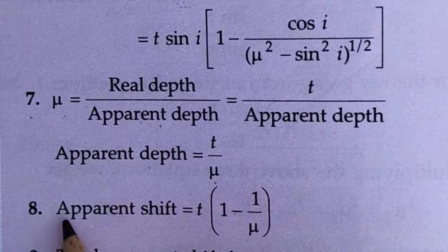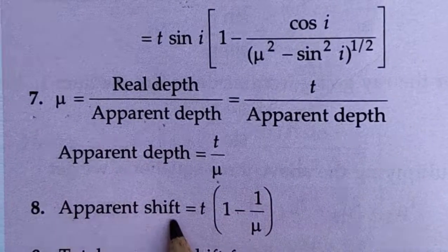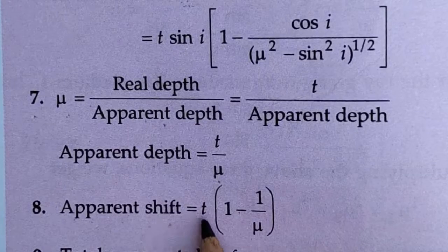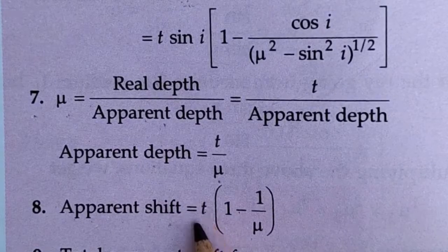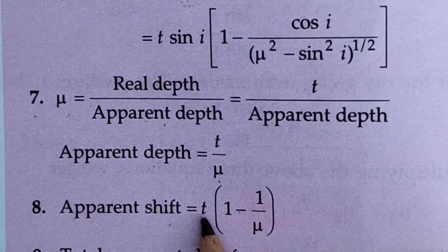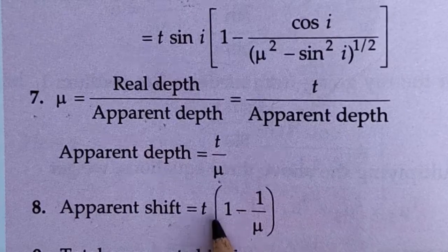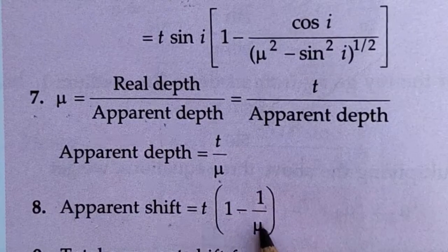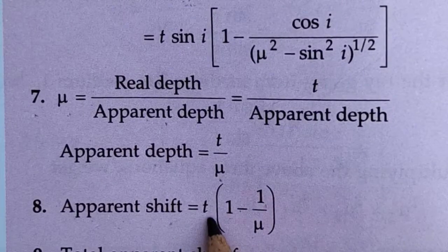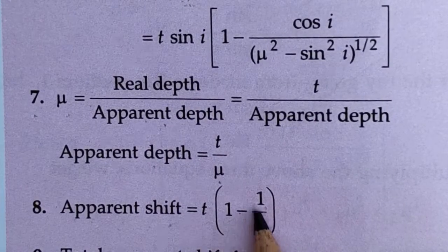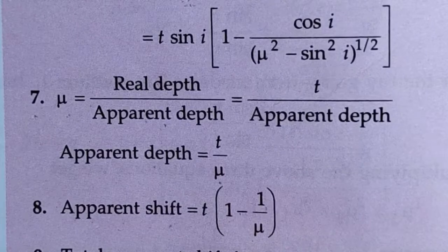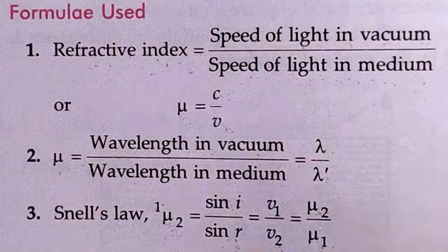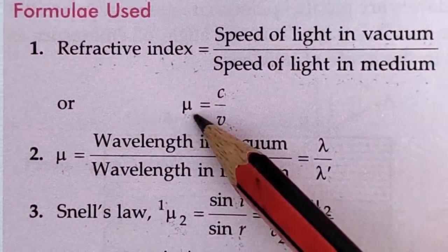The apparent shift formula: apparent shift equals t times (1 minus 1 by mu), where t is the real depth. So apparent shift equals real depth into (1 minus 1 by mu). Note: refractive index has no unit.